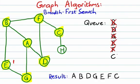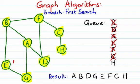Back to the queue to decide where to go next — it tells us to go to C. We take a look at all vertices connected to C. We've been to F already, but we haven't been to H, so we visit H, mark it as visited, and add it to the queue. We're done with C. We go back to the queue and see that H is at the head. We dequeue it, take a look at everything connected to H — nothing new there — so we're done with H. When we go back to the queue, we see it's empty, which tells us that this traversal is complete.